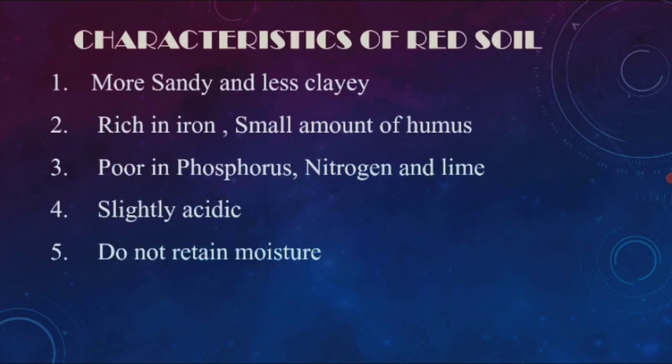The characteristics of the red soil are: more sandy and less clay, rich in iron, small amount of humus. Deficient in potassium, nitrogen, lime. Acidic — does not remain moist.